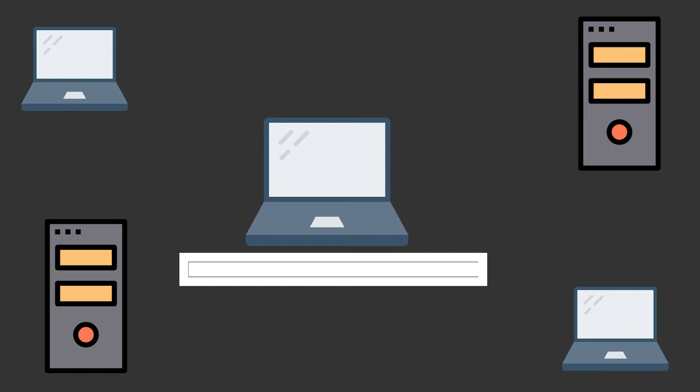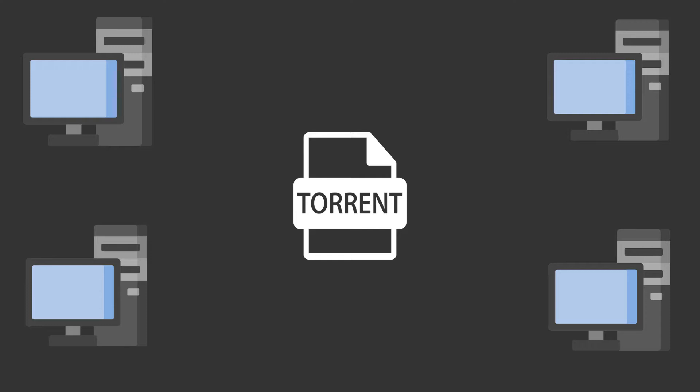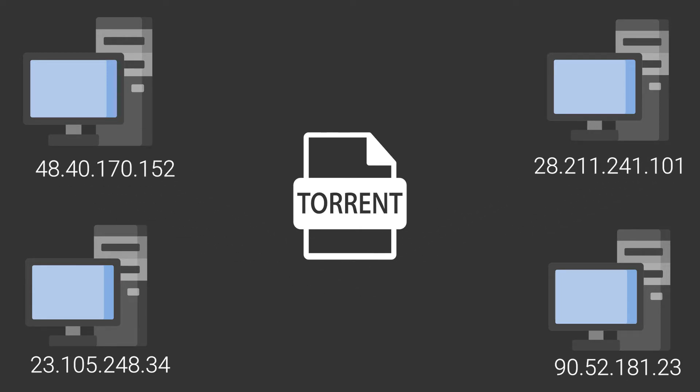So how does it track users? It all starts with a file that has the extension .torrent, which you download from any torrent site. This file includes information about the Tracker — a server that keeps track of connected users who are sharing the file. The Tracker provides users' IP addresses to a torrent client, which allows you to connect to them. Once connected, it starts downloading different pieces of the file from different users, preferably those nearer to you. And once you have some pieces downloaded, you can also become a seeder, meaning you start uploading the file you have, becoming part of the broader swarm.